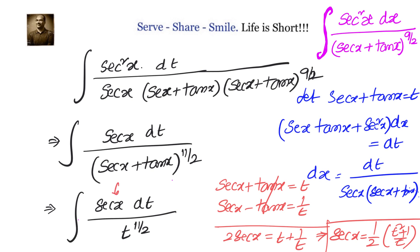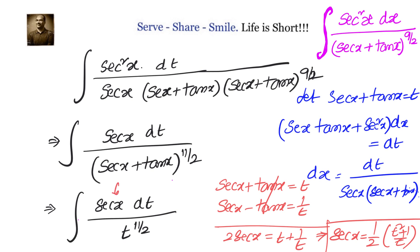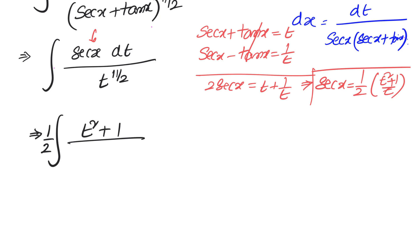We now substitute this into the integral. We write the integral of secant x, which equals one-half times t squared plus 1 divided by t, multiplied by t to the power of 11 by 2, dt. Now let us separate them into two terms.